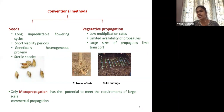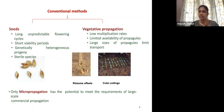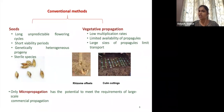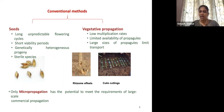The vegetative propagation methods include culm cutting, rhizome offsets, branch cutting, and air layering. But this procedure has a lot of restrictions, such as very low multiplication rate, limited availability of propagules, and the propagules produced from these methods are very large in size, limiting transportation of this material. Micropropagation stands in its own way and can produce huge numbers of propagules within a limited time.